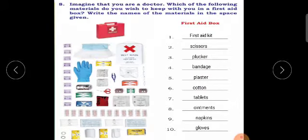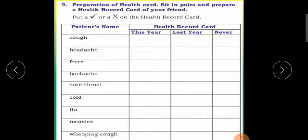Preparation for health card. Sit in pairs and prepare a health record of your friend. This is the health record. You have to sit in pairs or ask your friends near your home or your parents to prepare a health card. You have to take a tick up for each condition. For example, patient name.